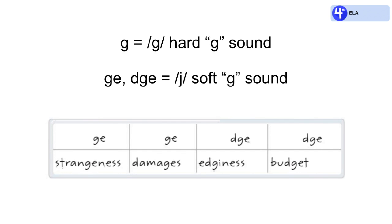The word strangeness has GE in the middle of the word making the J sound. We have the word strange plus the suffix -ness: strangeness. We also have the word damages. We have the word damage plus the S to make it plural: damages.